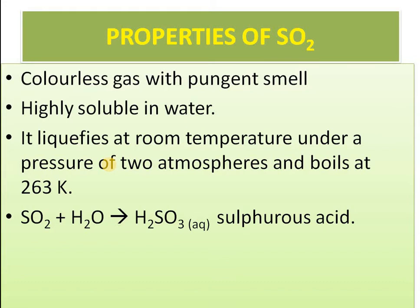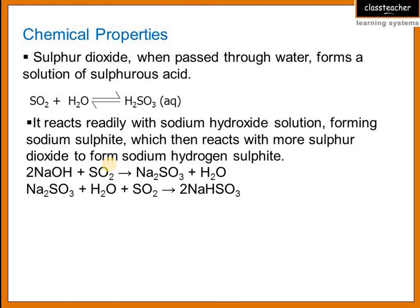In contact with water, sulfur dioxide releases the dibasic acid sulfurous acid (H₂SO₃). Chemical properties include: on contact with water it gives sulfurous acid H₂SO₃, which is an acidic gas. Just as an acid reacts with a base to give salt and water, sulfur dioxide reacts with sodium hydroxide to give sodium sulfite.